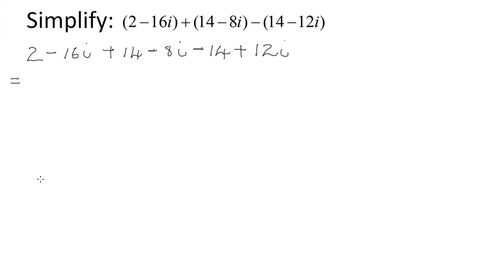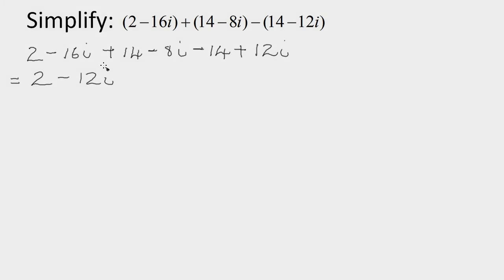Then we add or subtract all the real parts and imaginary parts. Real parts: 2 + 14 − 14 = 2. Imaginary parts: −16i − 8i + 12i = −12i. So the final answer is 2 − 12i.